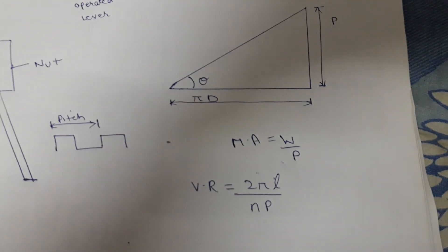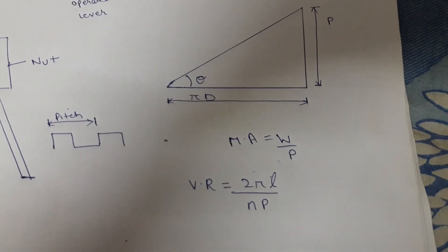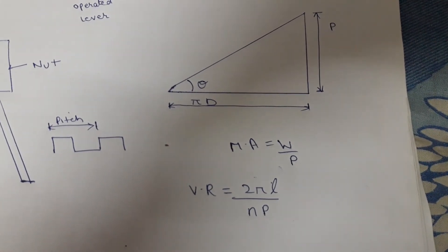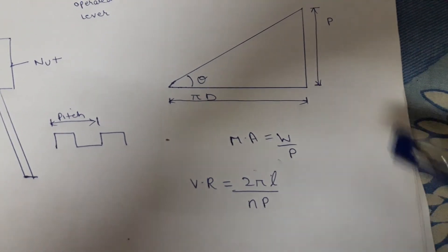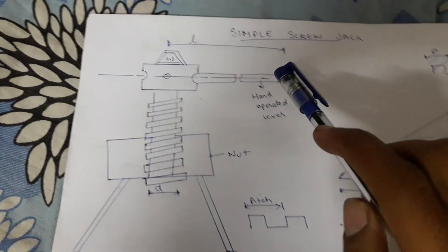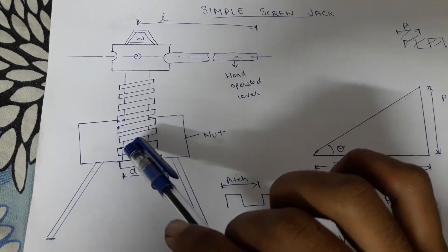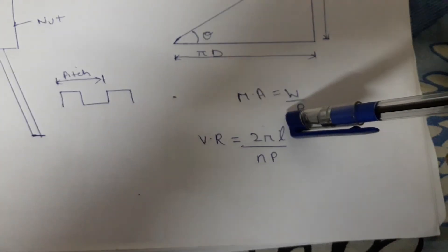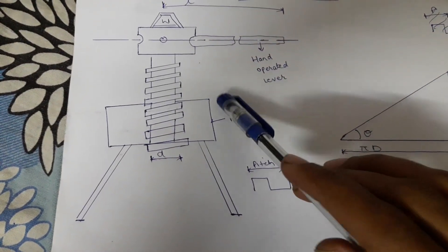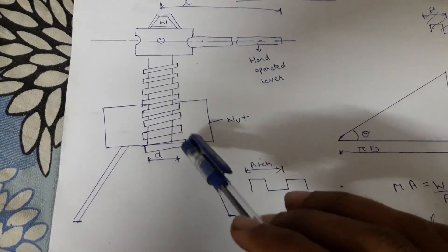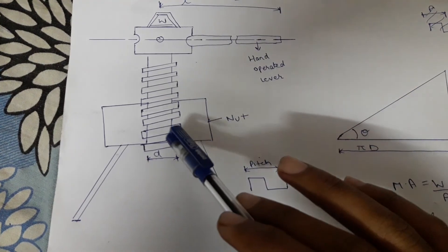And we all know about the velocity ratio that velocity ratio may be defined as the distance moved by the effort to the distance moved by the load. So the effort is applied with the help of hand operated lever and as on its circumference it moves 2 pi L and the load lifted. I previously tell you that it all depends upon the square threaded screw.